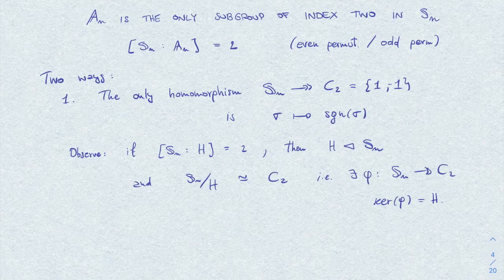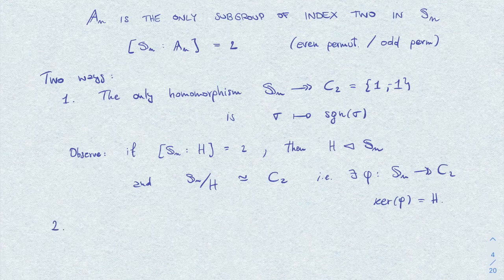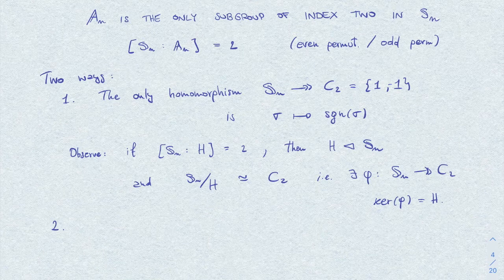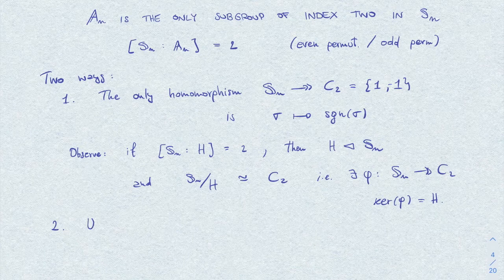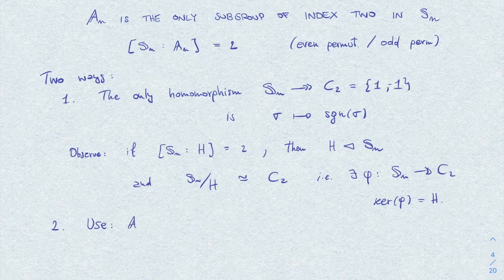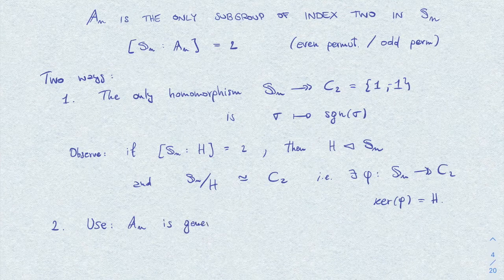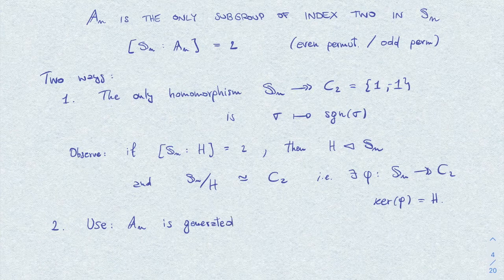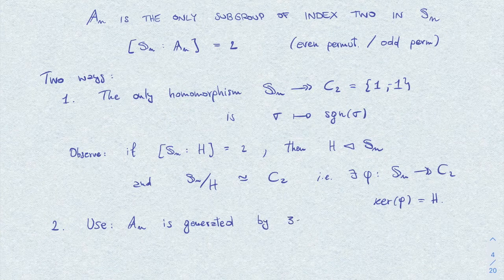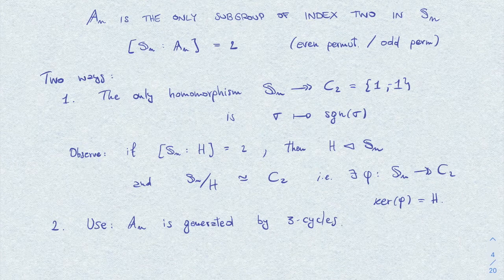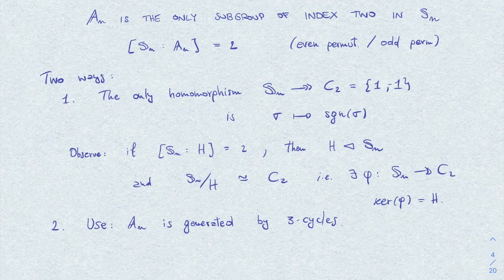The kernel of the sign function. Now for the second way I want to use some additional fact, which is the nice and interesting fact that A_n is generated by three cycles.